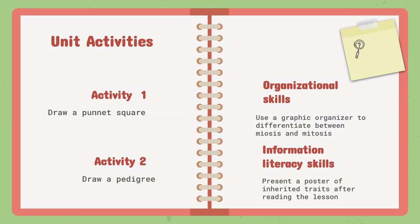As for the skills used in this unit: organizational skills — we will use a graphic organizer to differentiate between meiosis and mitosis. For information literacy skills, we will present a poster of inherited traits after reading and skimming the lesson. This is how we use literacy skills from the information we have learned.